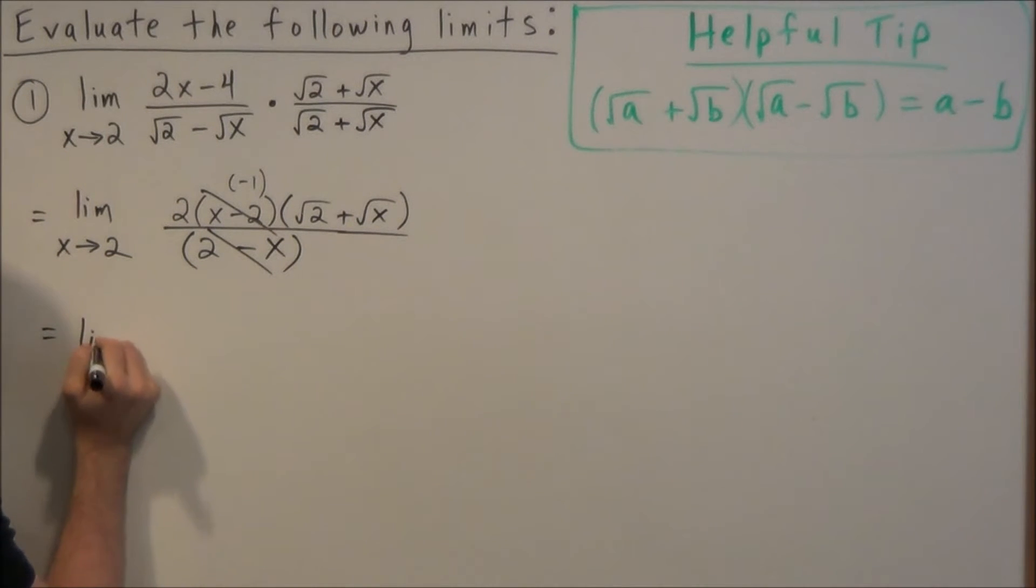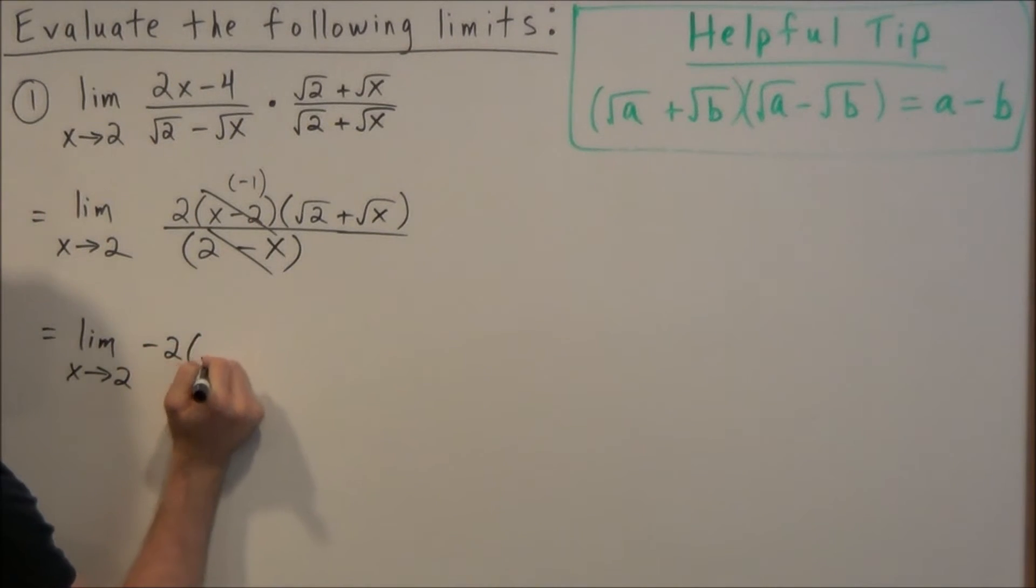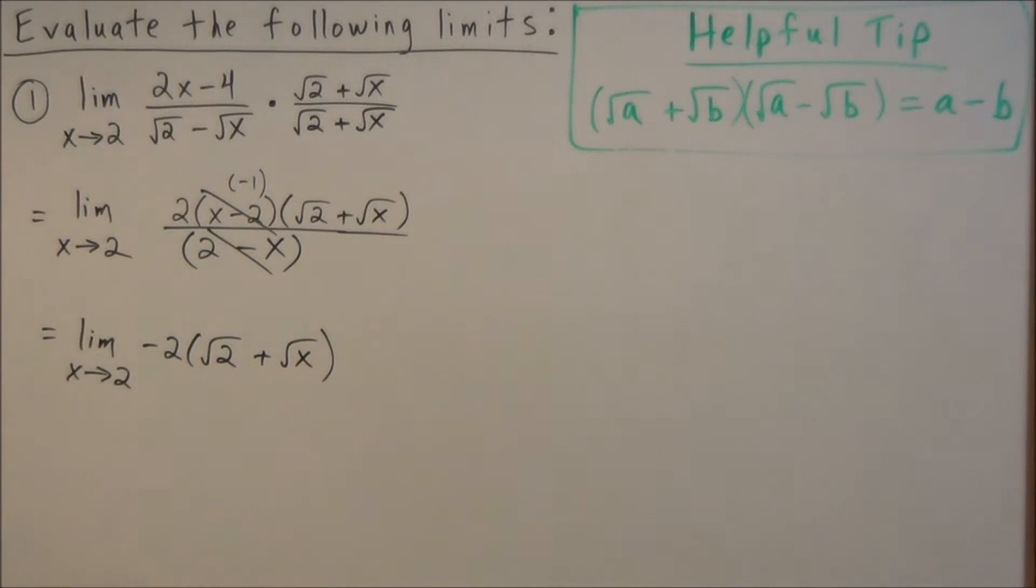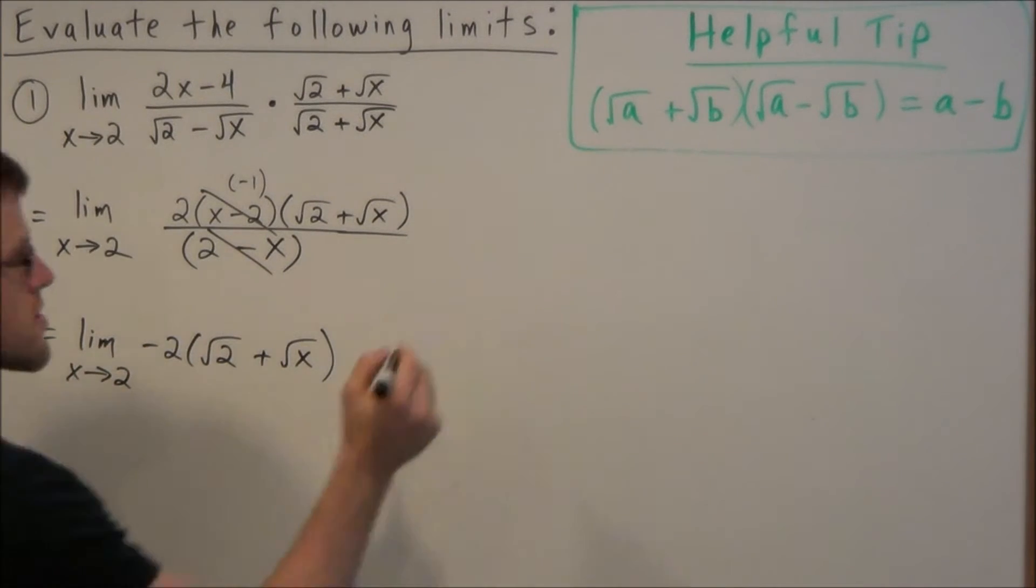So then for the next stage of this problem, we can simplify this a bit. This is the limit as x approaches 2, and we have negative 1 times 2 is negative 2, and we have radical 2 plus radical x. So now that the factor is removed, we can plug in now.